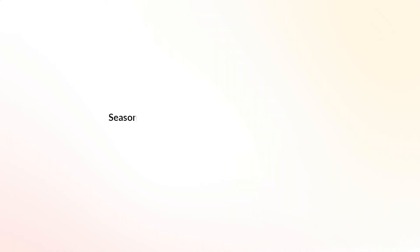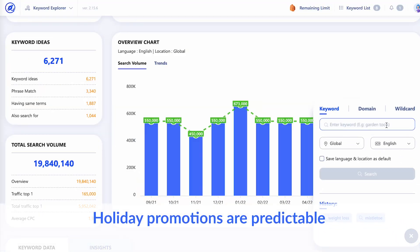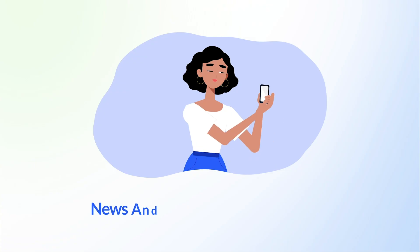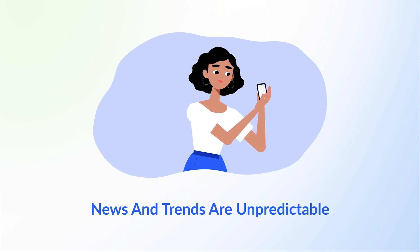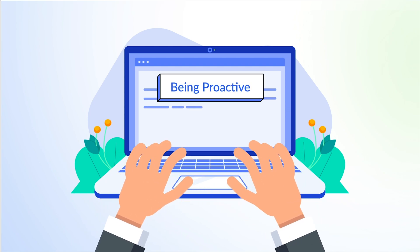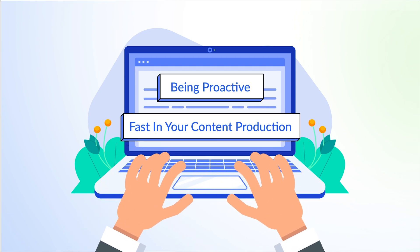When it comes to evergreen and seasonal keywords: seasonal keywords are mostly about news, trends, hobbies, or holiday-specific topics. Things like holiday promotions such as the Christmas season are predictable and you can plan your content in advance to capture some of that search volume. On the other hand, news and trends are unpredictable — think celebrity news and gossip blogs. Capitalizing on this requires being proactive and fast in your content production. Think carefully about targeting this type of keyword if you're not confident on the quality of your content or if the trend will pass soon — your time could be wasted.